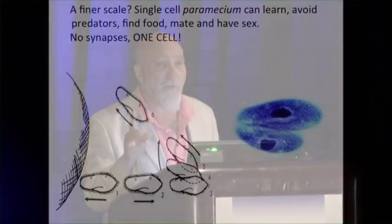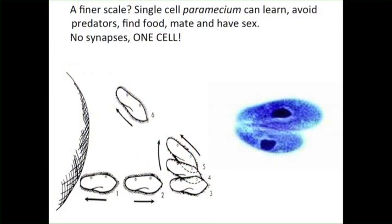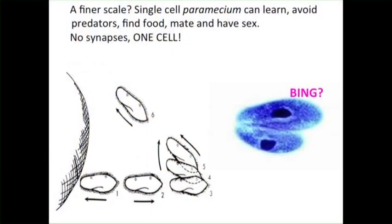Another problem with the general view is that neurons are assumed to be simple switches. Actually, neurons may be much more complicated. To illustrate this, look at a single cell like a paramecium — one cell, like a neuron. It can swim around, avoid obstacles, learn — if you suck it into a capillary tube, it escapes faster each time. It can avoid predators, find food, find a mate and have sex. And this is an X-rated picture of two paramecia having sex. It's a single cell and it's rather clever. I always tell my AI colleagues: don't worry about simulating a brain — simulate a paramecium and go from there.